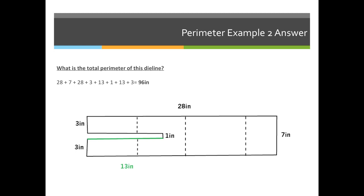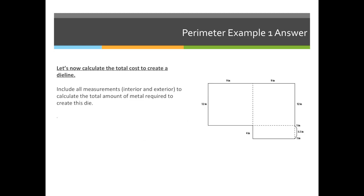But we can't forget about calculating all the interior lines that require metal for our die as well. So let's go back to our first example with the pocket folder. If we were to calculate the total amount of metal needed for this die, we would have the same formula for the perimeter, plus we'd add all the interior dashed lines, which indicate folds.